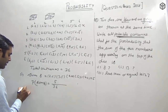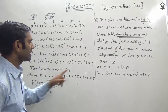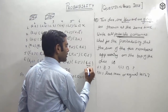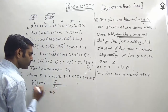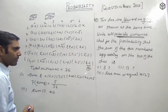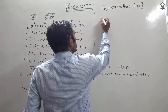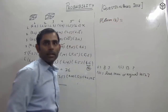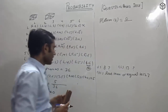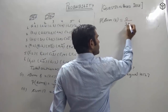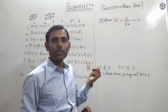For sum = 13: the highest possible sum is 6+6 = 12. So sum 13 is impossible — it won't appear in any case. Therefore P(sum = 13) = 0/36 = 0. Dividing 0 by any number always gives 0.